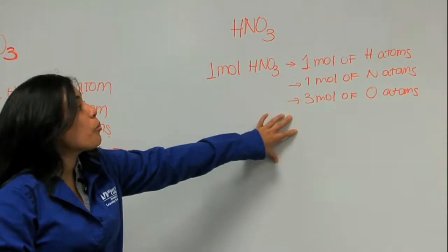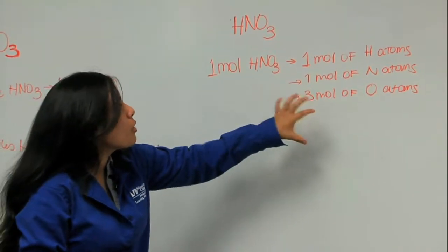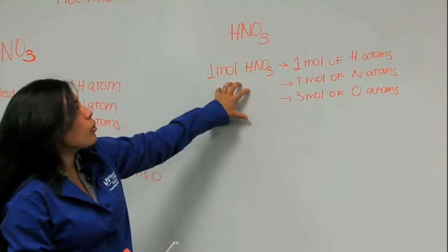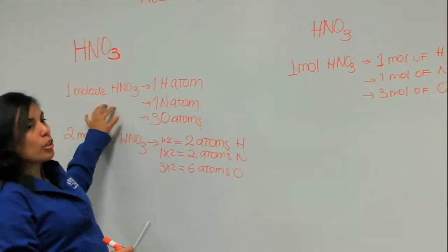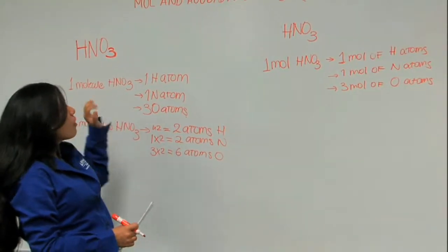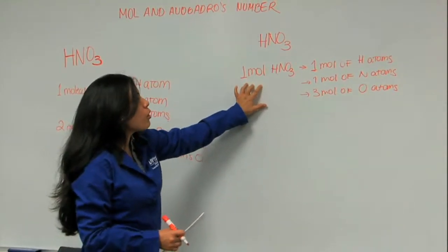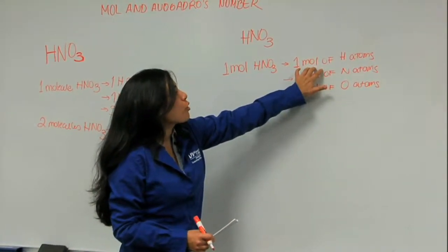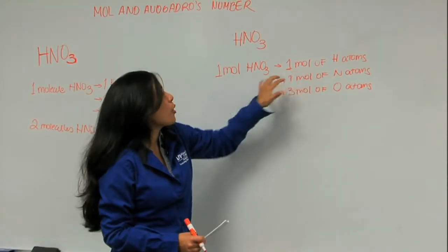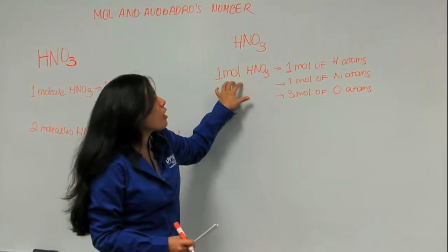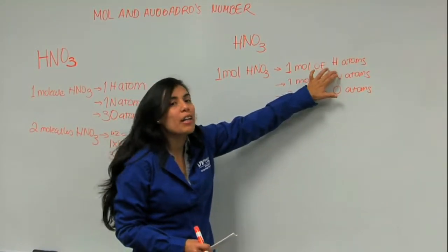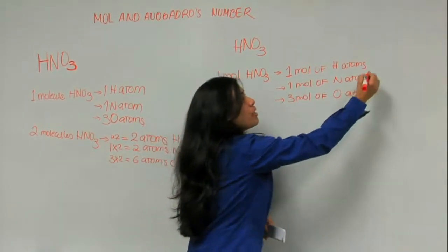This is very important so that you can see the difference between talking about mole and talking about molecules. When I talk about moles, my answer is going to be also in the mole form. So if I have one mole of nitric acid, I have one mole of hydrogen atoms.